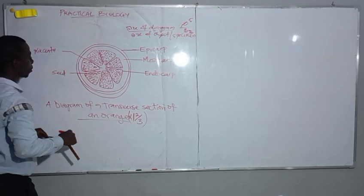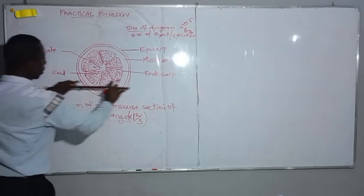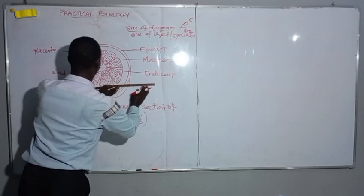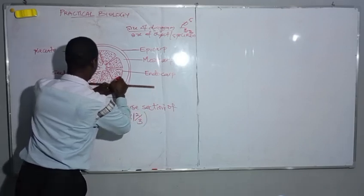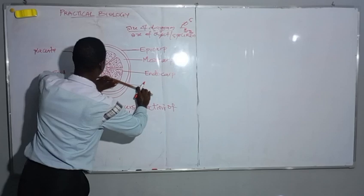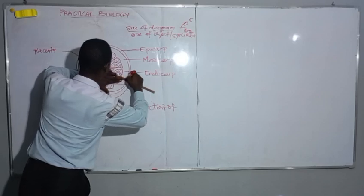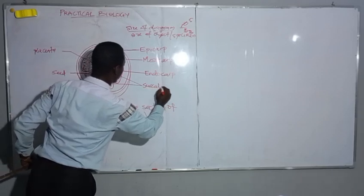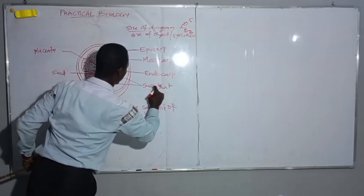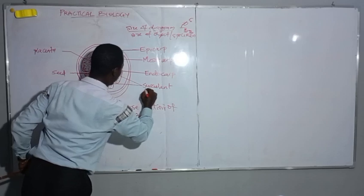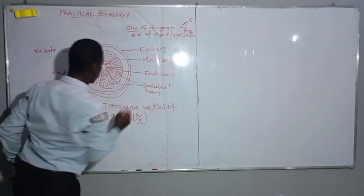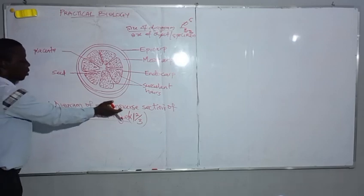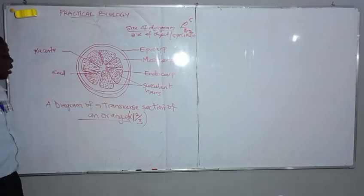And these are succulents. So this is how to draw a transverse section of an orange.